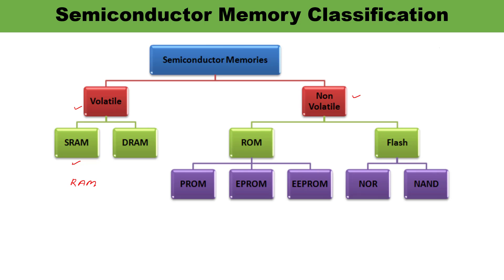DRAM, or dynamic random access memory, is also a read-write memory. Here data is stored in the form of electric charges in capacitors, with transistor pairs between the memory cells. The stored charge takes some milliseconds to dissipate; therefore, periodic refreshing of the elements is required. The data is stored in capacitors in the form of charges.